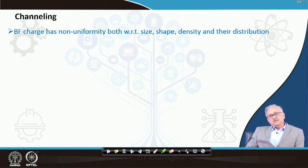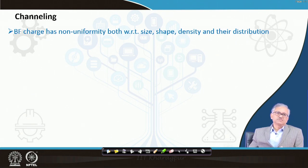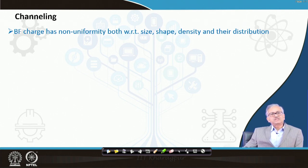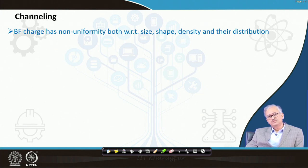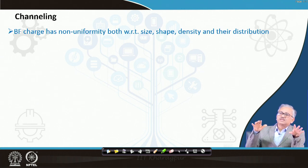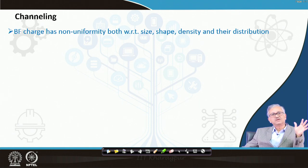Now let us come to channeling and its mechanism. The blast furnace charge has non-uniformity — both with respect to size and density and their distribution. It is not uniform-sized particles of uniform density across the cross-section; rather, it is a very complex solid distribution. Therefore, local variation of pressure is evident.